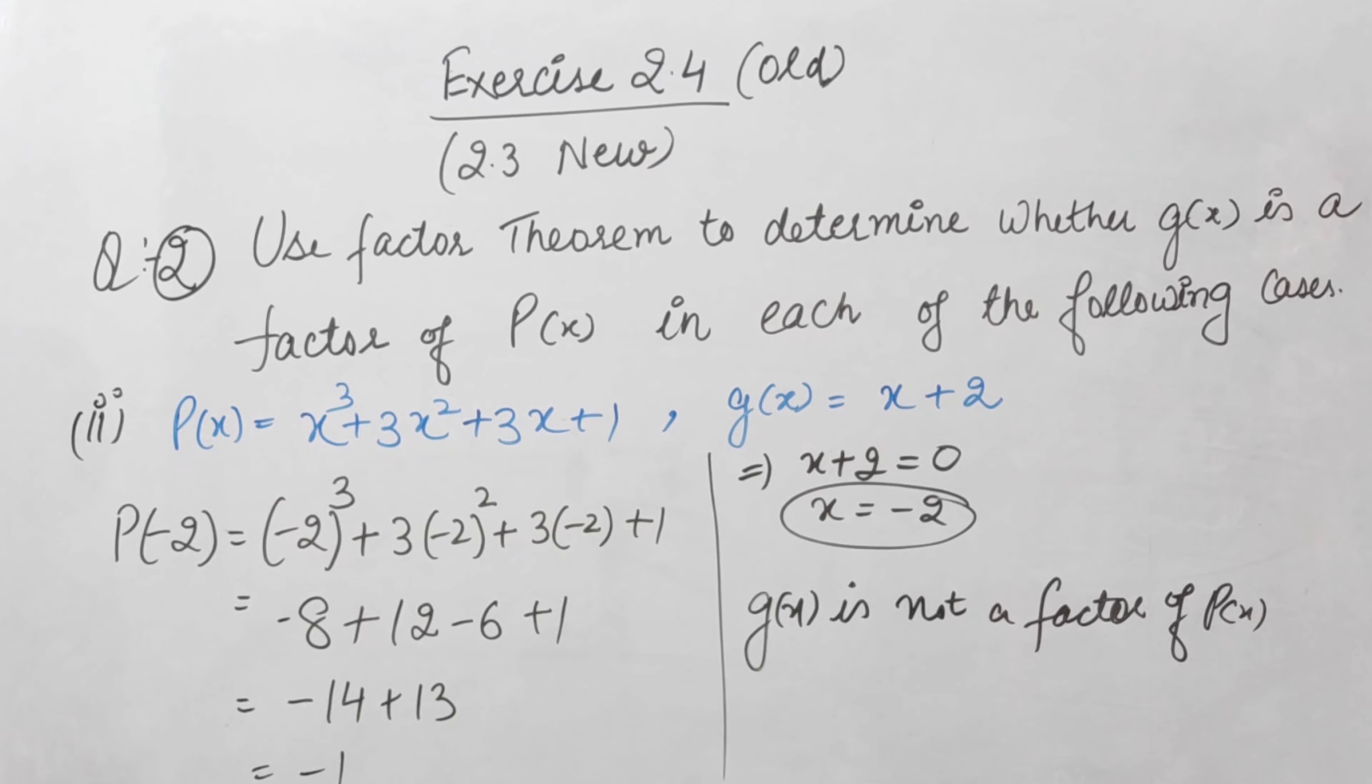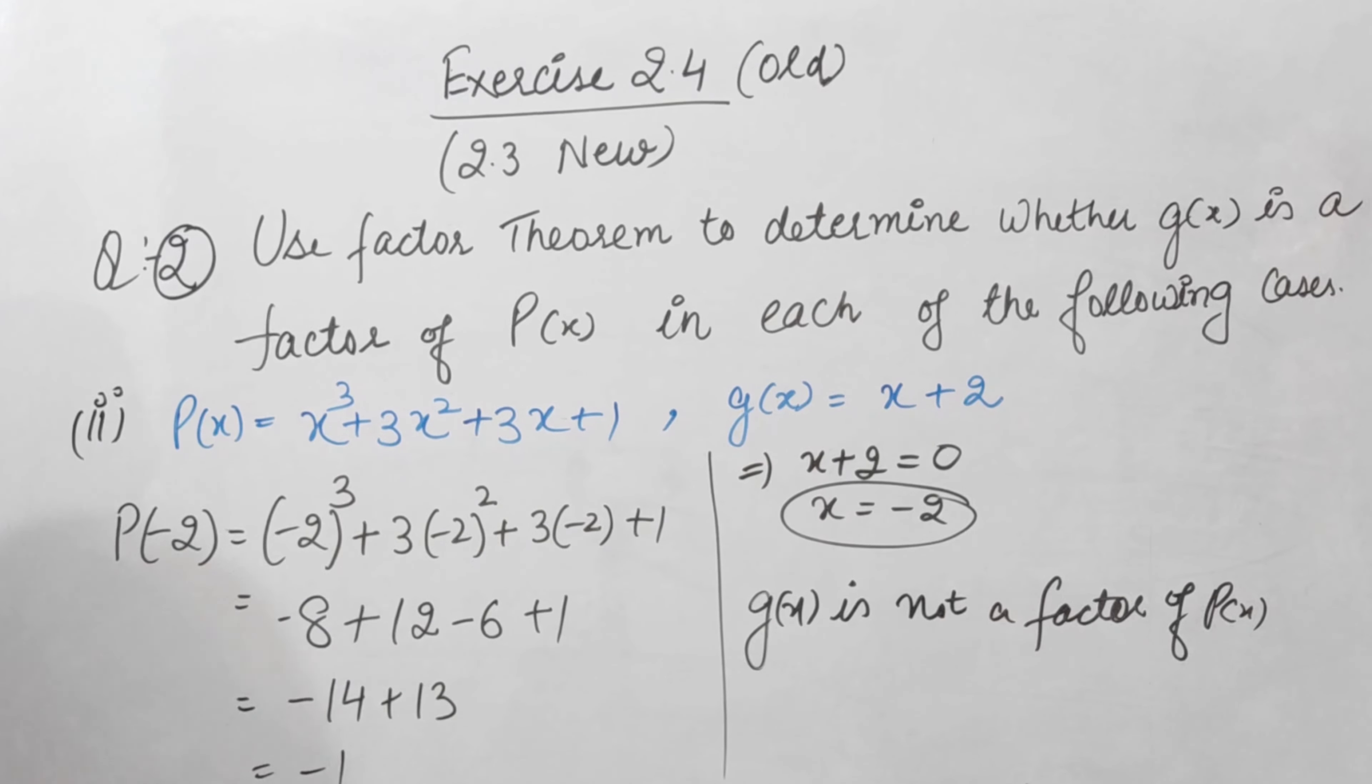We put the g(x) polynomial equal to zero to find the value of x, and then put that x value into the P(x) polynomial to check if it equals zero. If yes, then it's a factor, otherwise not. Let's do the third part.